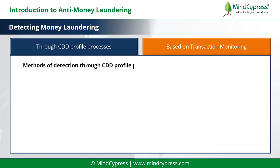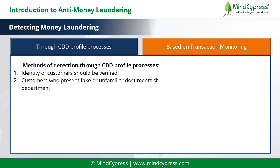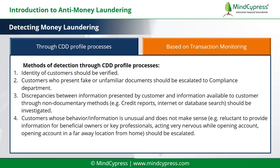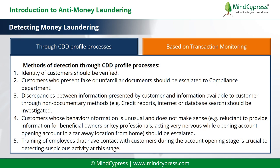Methods of detection through CDD profile process: 1. Identity of customers should be verified. 2. Customers who present fake or unfamiliar documents should be escalated to the compliance department. 3. Discrepancies between information presented by the customer and information available through non-documentary methods — such as credit reports, internet, or database search — should be investigated. 4. Customers whose behavior or information is unusual, such as being reluctant to provide information for beneficial owners or key professionals, acting very nervous while opening an account, or opening an account in a faraway location from home, should be escalated. 5. Training of employees who have contact with customers during the account opening stage is crucial to detecting suspicious activity.